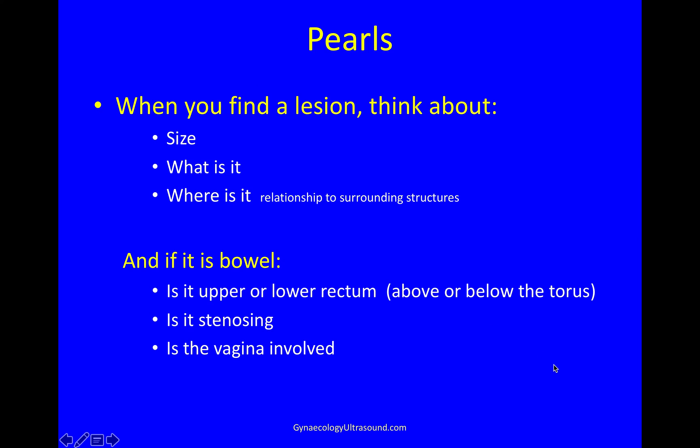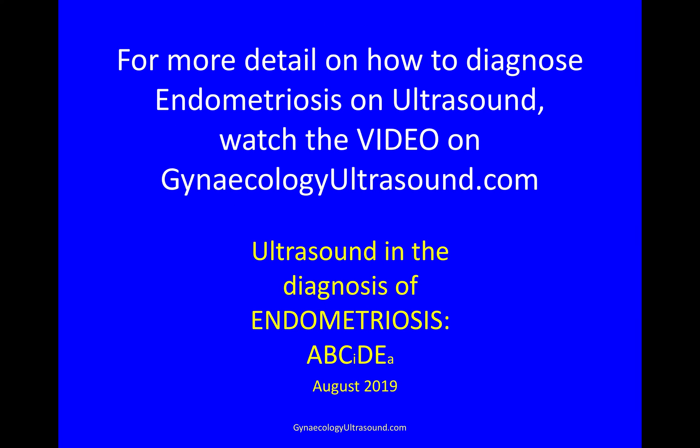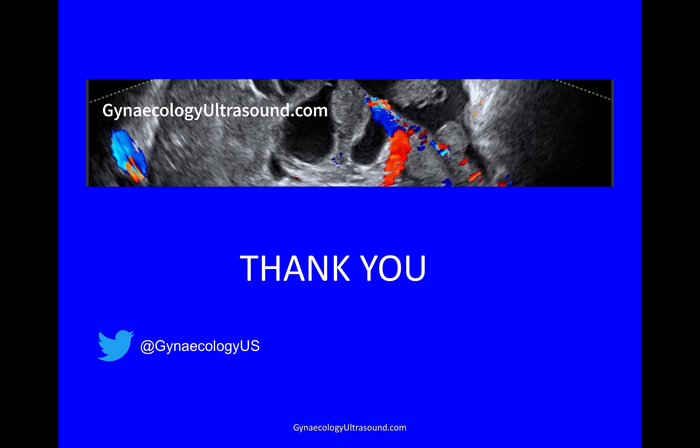So when you find a lesion, think about: what size is it, what is it, and where is it? And if it's bowel, is it upper or lower rectum — above or below the torus? Is it stenosing? And is the vagina involved? There's a longer video on diagnosing endometriosis on the website. Thank you.